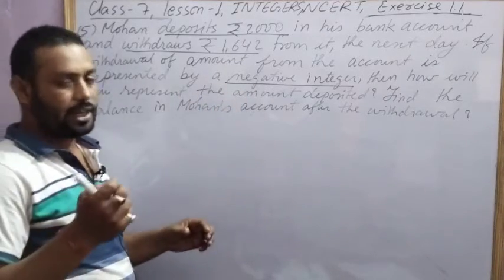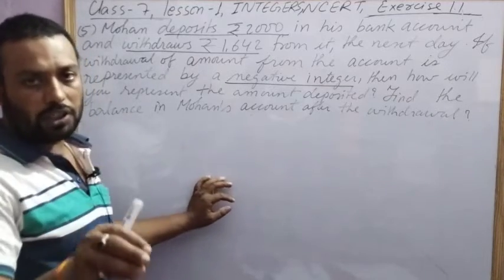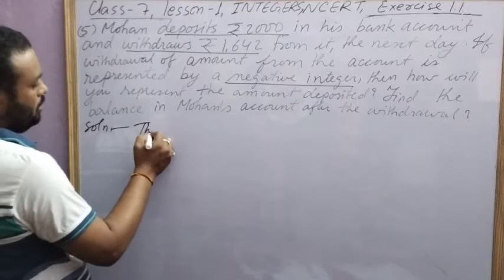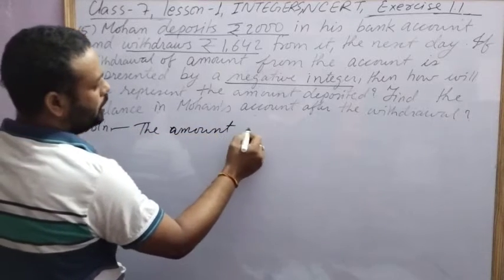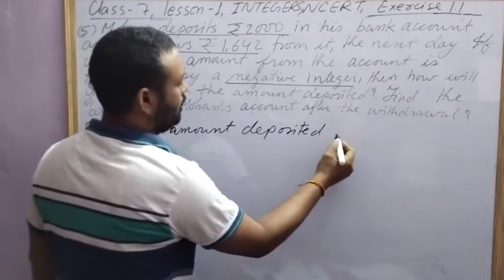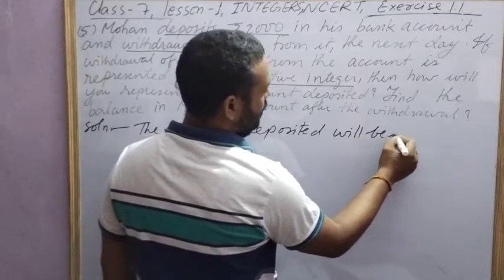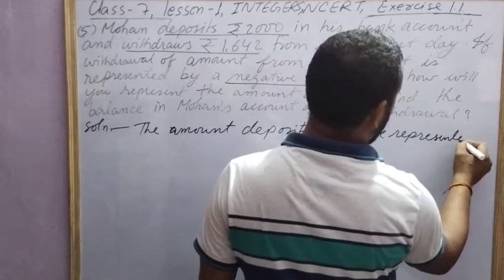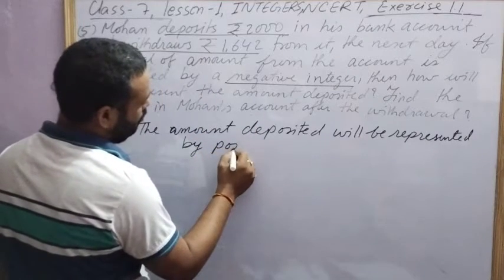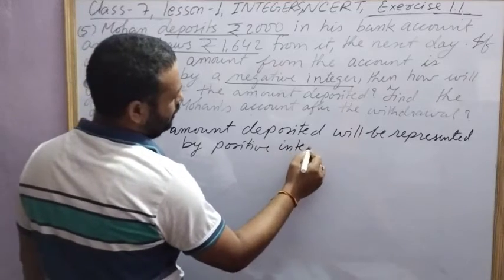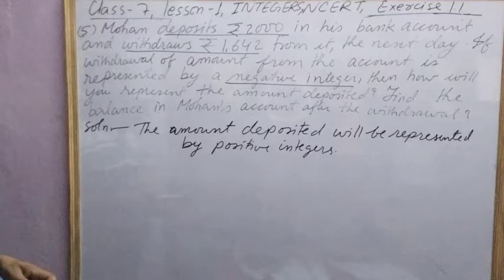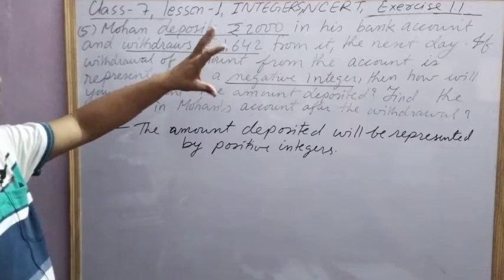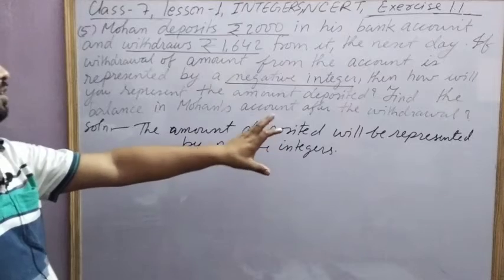If withdrawal is negative, money taken is known as withdrawal, so money deposited will be positive integer. Solution: In this situation, the amount deposited will be represented by positive integer. Second, find the balance in Mohan's account after the withdrawal. Balance means money deposited was this, withdrawal was this. The difference of these two will be the money left in the account.